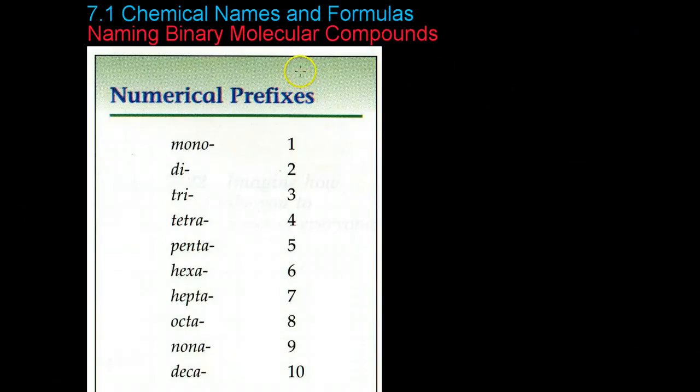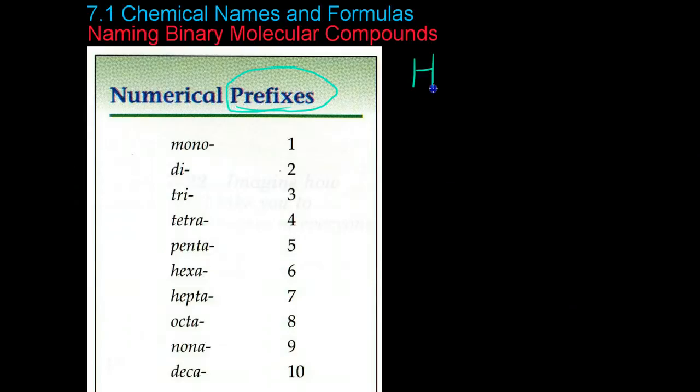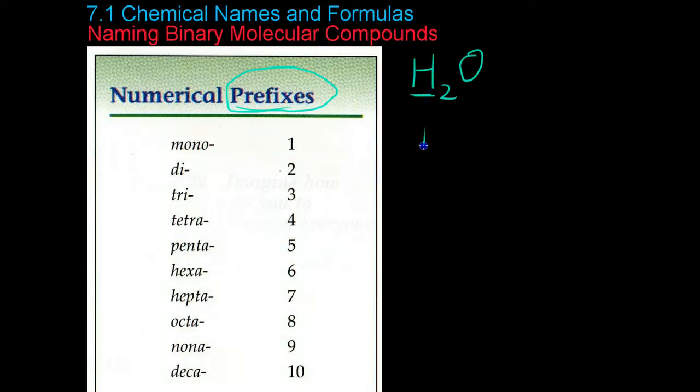So now we're going to be looking at naming molecular compounds, which, in case you couldn't tell by this chart over here on the left, rely on various prefixes to get their names. So if we start with a very familiar molecular compound, like let's say water, what you do is you take the element that's in the earlier group, in this case hydrogen, and you write that down in its full name.